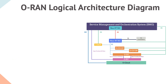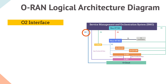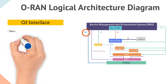Next is the O2 interface, which is between SMO and O-Cloud. O2 interface supports the management of the cloud infrastructure and the use of cloud resources allocated to the RAN. Examples of functionalities supported by the O2 interface include discovery and administration of O-Cloud resources,